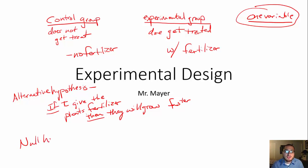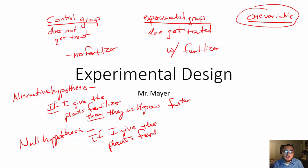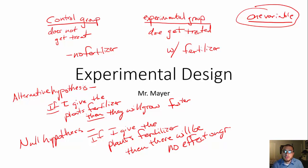You could also have your null hypothesis, which is going to say basically there's no effect. So you could say, if I give the plants fertilizer, then there will be no effect on growth. And you always remember, you only want to change one variable. Everything else will be the same — the type of plant, the type of soil, the amount of soil, the amount of water. The only thing you're changing is the fertilizer.